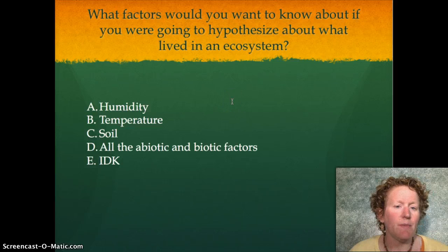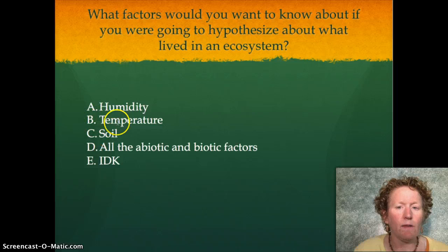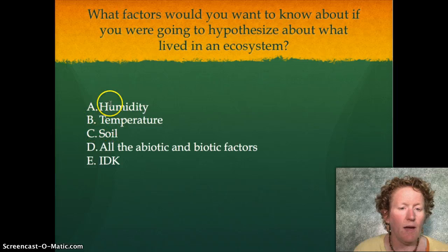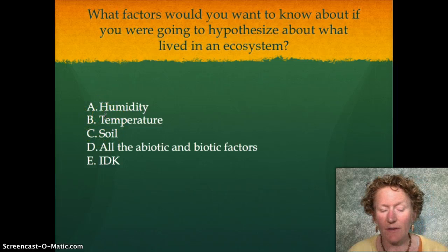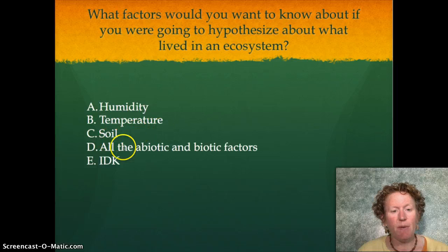If you were going to hypothesize about what lived in an ecosystem, you definitely would want to know all of this. If you didn't know the biotic factors but had all the abiotic data, you might be able to guess what lived there. But the best answer is D — all of them.